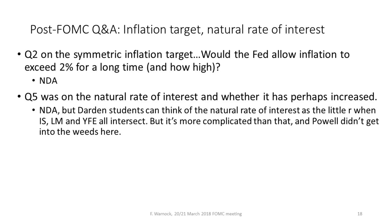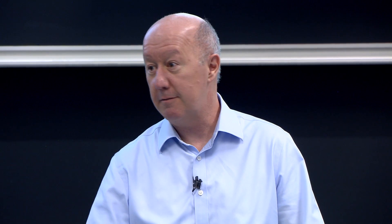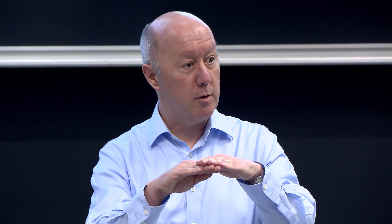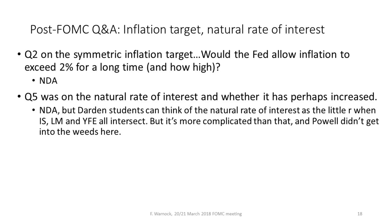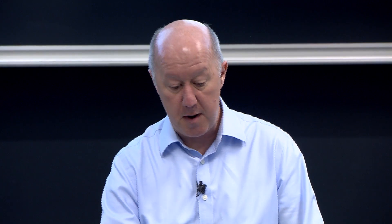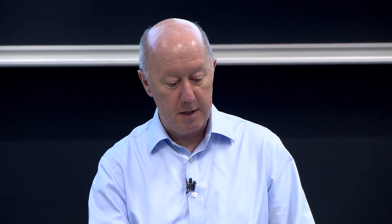There were questions on the symmetric inflation target: if it's truly symmetric and we've been below 2% for a long time, does that mean you'll let inflation go above 2% for a long time, and how high? No direct answer — he just reiterated it's a symmetric target, not a ceiling; it can go above 2% but he's not saying how far or how long. The natural rate of interest also came up — another unobservable but important concept: the real interest rate where IS, LM, and YFE all intersect, where there's no tendency for inflation or deflation. Powell pushed that one away.